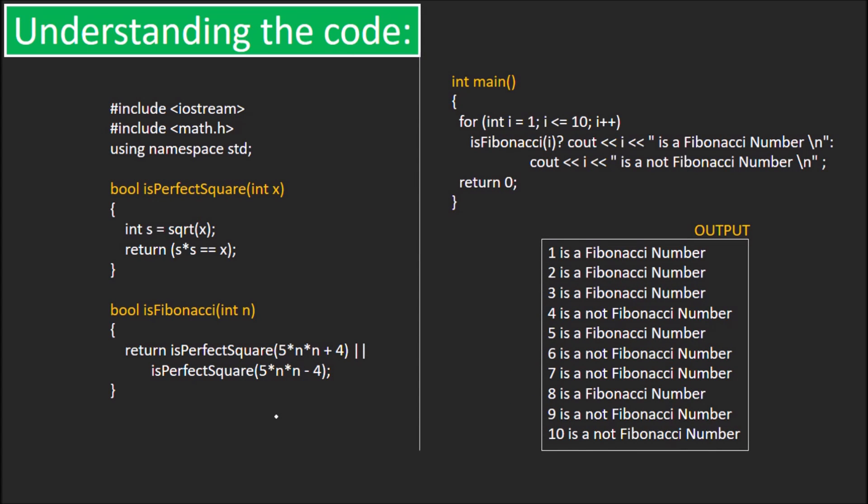Let's try to understand the code for the solution we just saw. We call this function isFibonacci on each of the numbers 1 to 10 to check which of them are Fibonacci. The statement returns true if one of 5n² + 4 or 5n² - 4 is a perfect square.